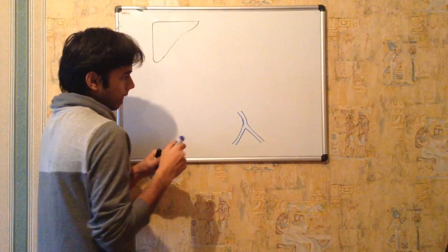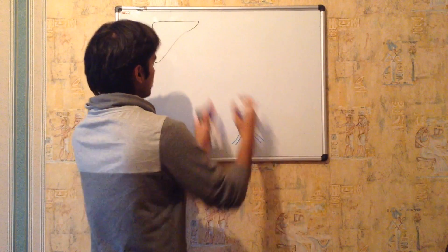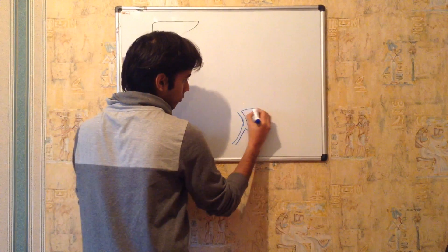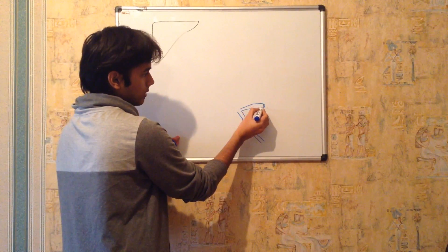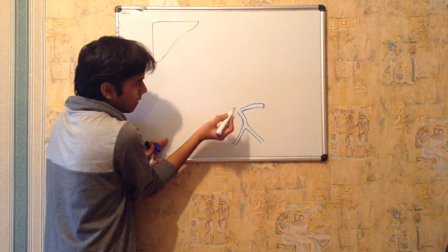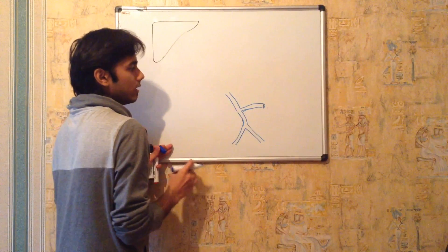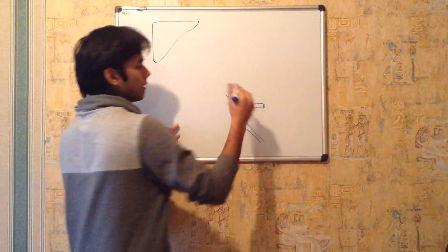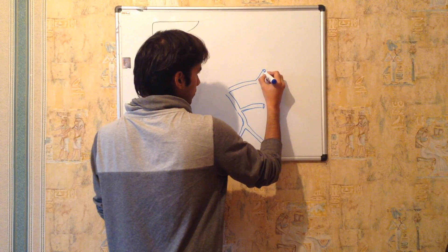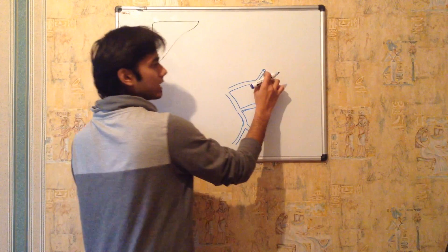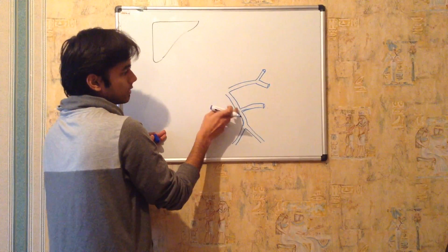The superior and inferior mesenteric veins collect venous blood and drain into the portal vein. As the portal vein proceeds toward the liver, it receives one more vein from the spleen region called the splenic vein. After receiving blood from the splenic vein, the portal vein ascends upward and receives one more vein from the stomach — the gastric vein — which receives blood from two branches: the left gastric vein and the right gastric vein, which then drain into the gastric vein and in turn into the portal vein.